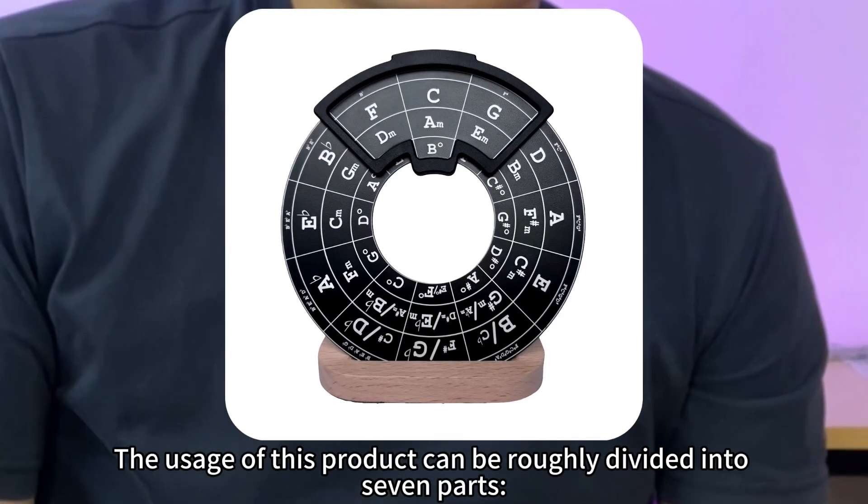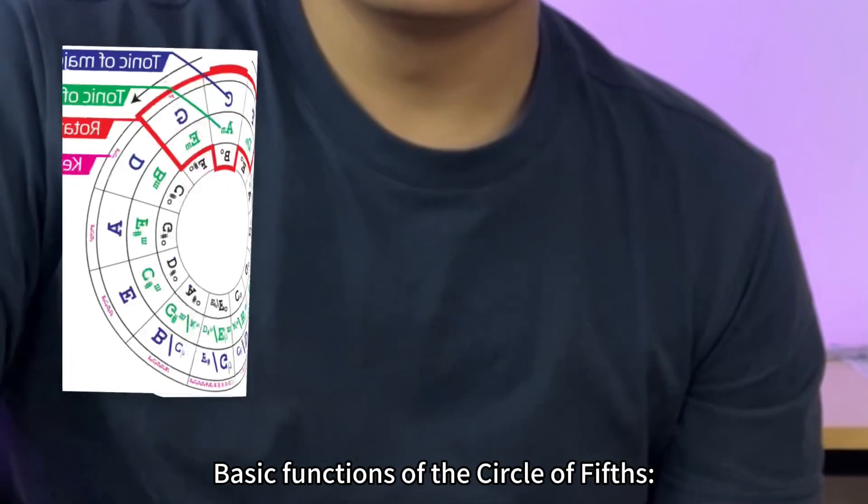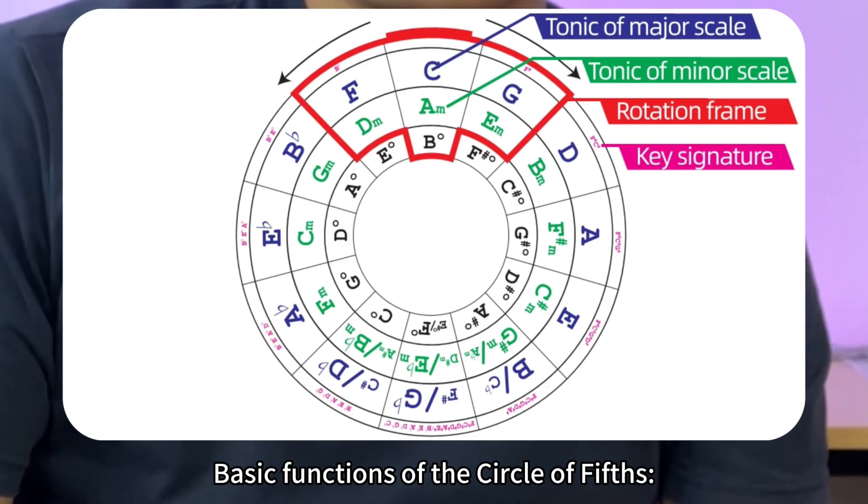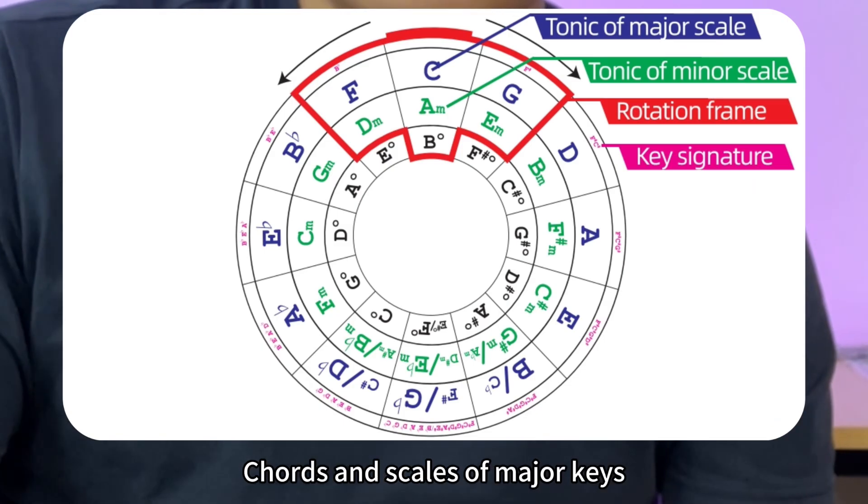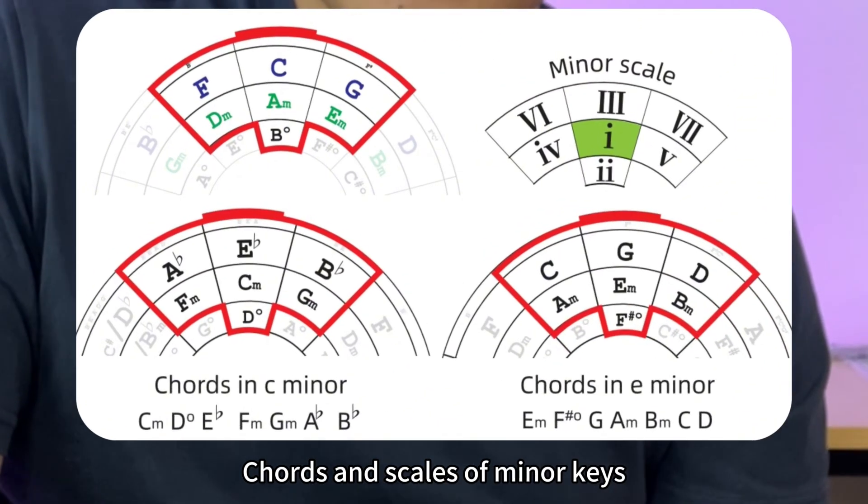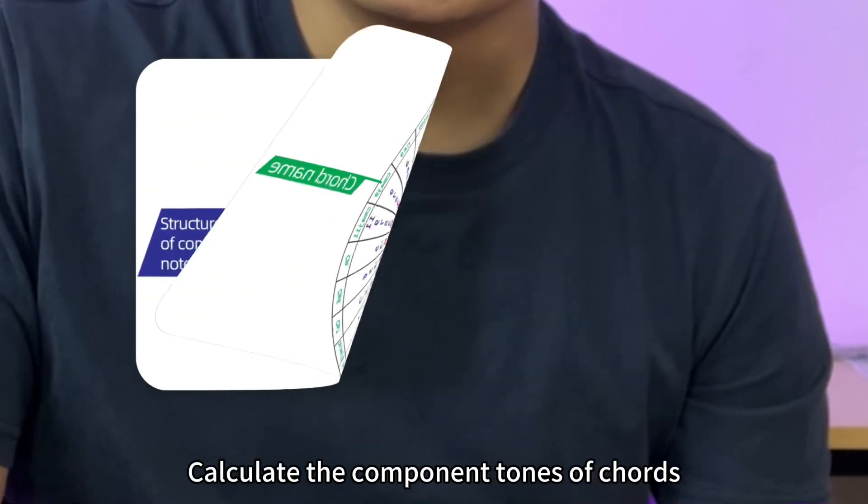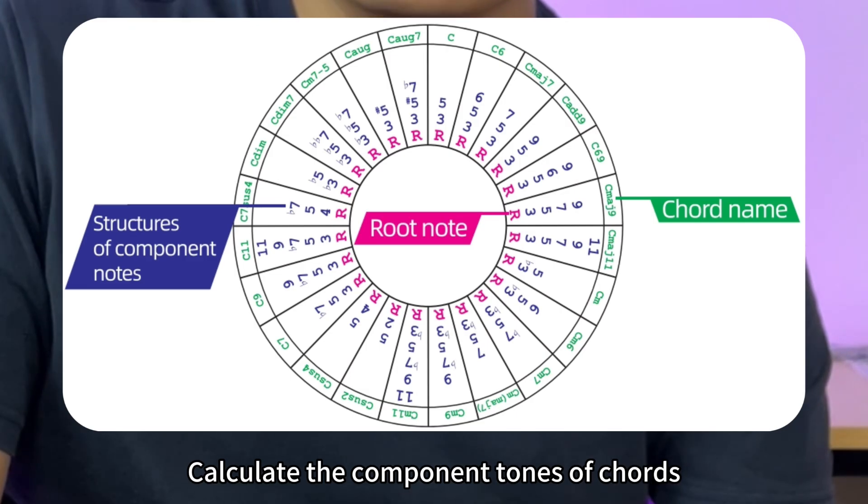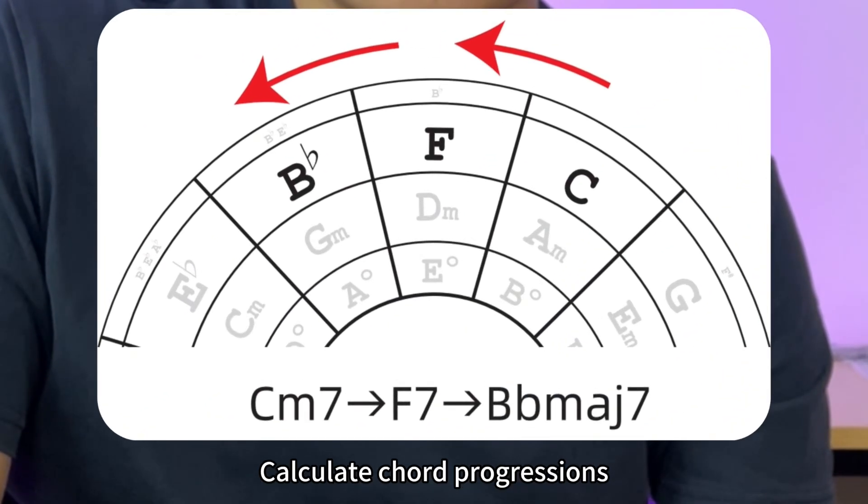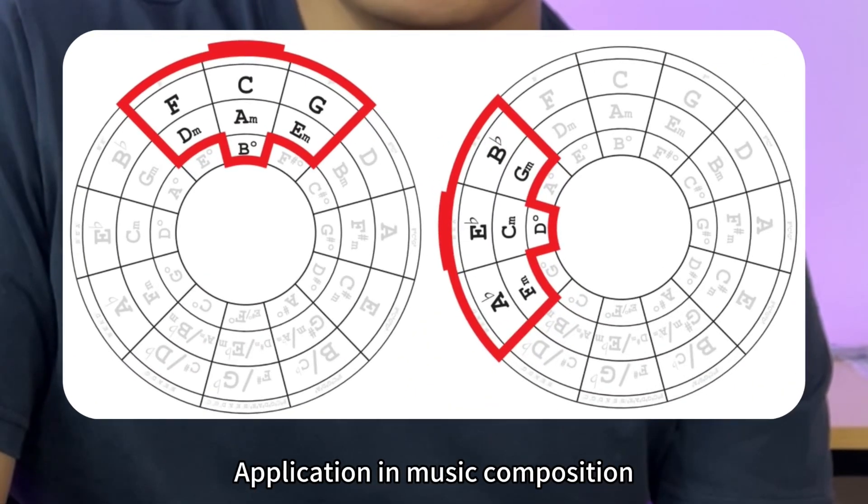The usage of this product can be roughly divided into seven parts: basic functions of the Circle of Fifths, chords and scales of major keys, chords and scales of minor keys, how to remember and calculate key signatures, calculate intervals, calculate the component tones of chords, calculate chord progressions, and application in music composition.